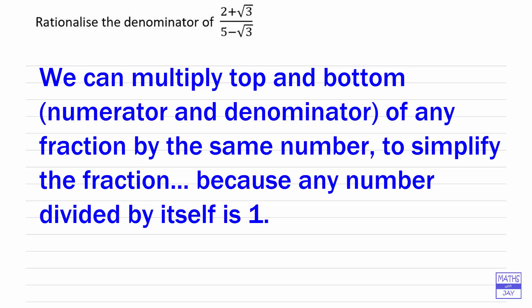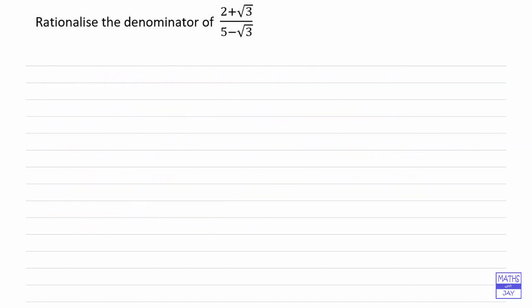The important thing is to find out what number that is. So let's step back from this example and just remind ourselves of the formula for the difference of two squares, because that will help us do this example. You ought to know that if we multiply (a minus b) by (a plus b), then if we multiply that out we get a squared minus b squared.